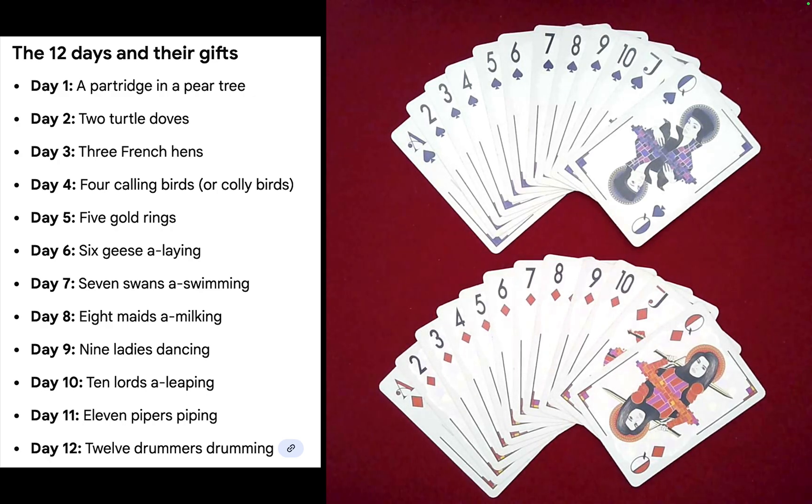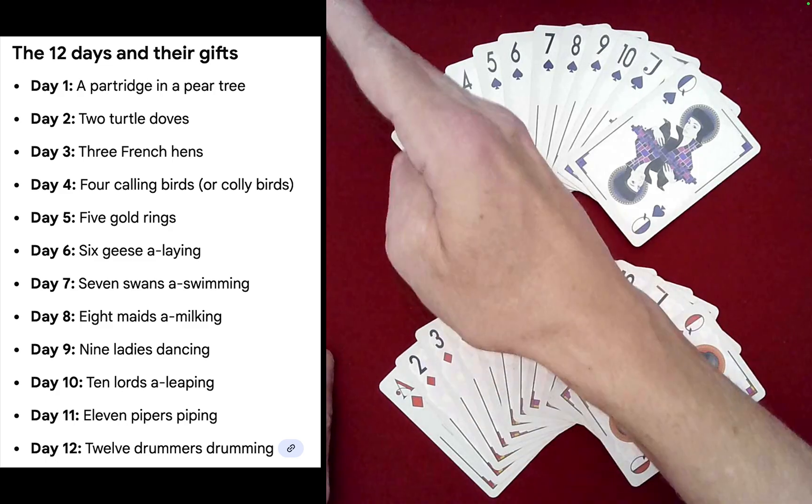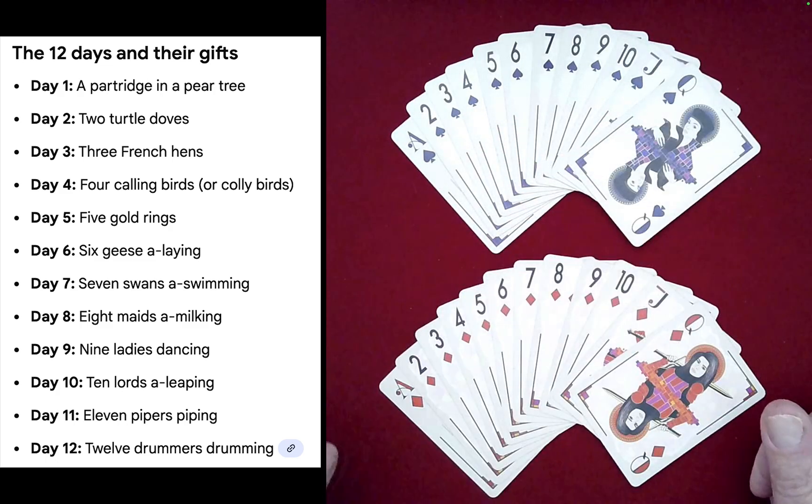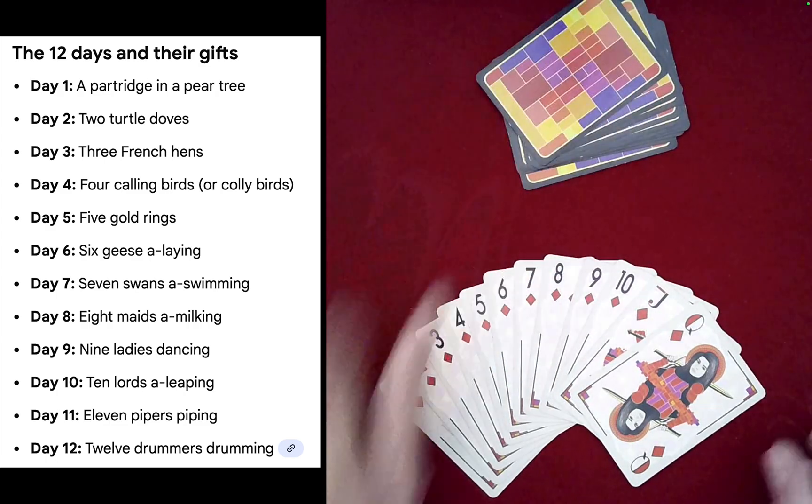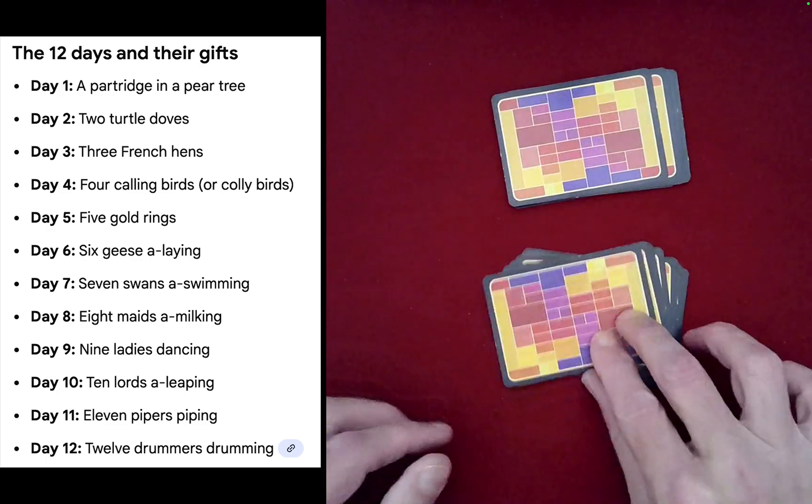I'm going to assume I have two spectators: spectator A over here and spectator B over here. Let's go ahead and gather these up.